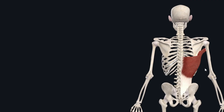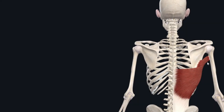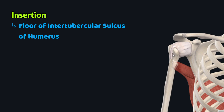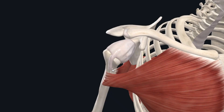After originating from these different areas, the fibers of the latissimus dorsi converge superolaterally to form a single flat tendon. This tendon of insertion passes anterior to the teres major muscle just before inserting into the proximal part of the humerus. Specifically, it inserts into the intertubercular sulcus of the humerus, between the teres major muscle and the pectoralis major muscle.